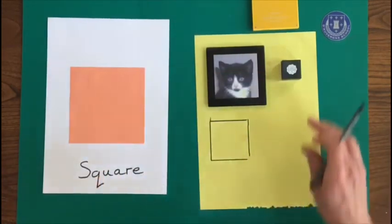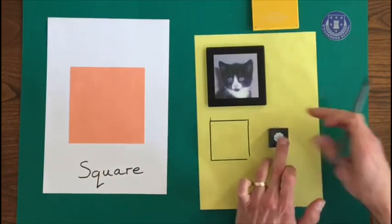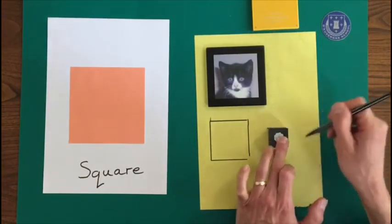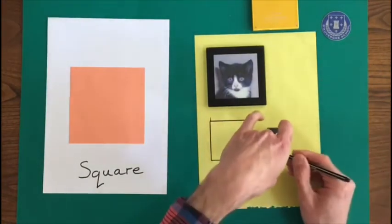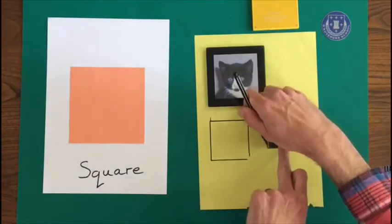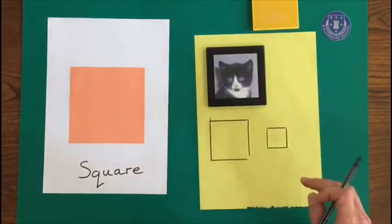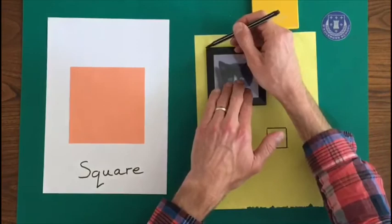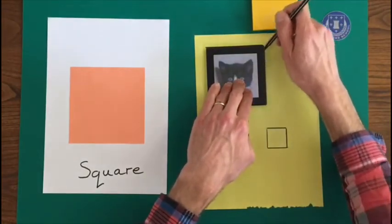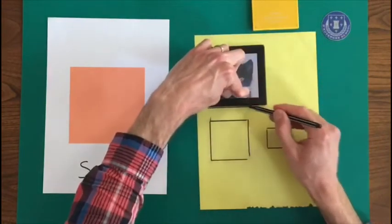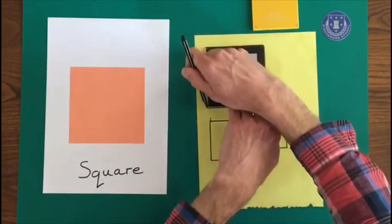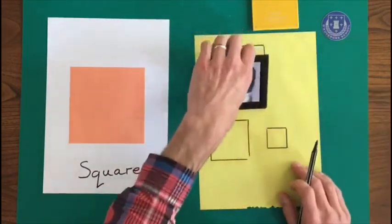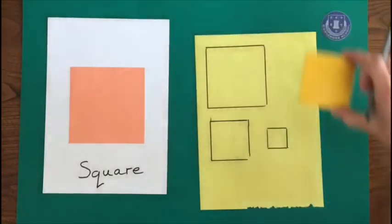So one square and a smaller square. There we go. Four. And then my coaster. Quite a large square. And last one.